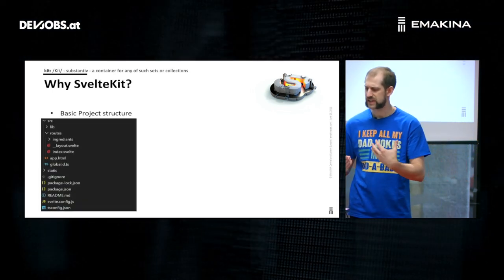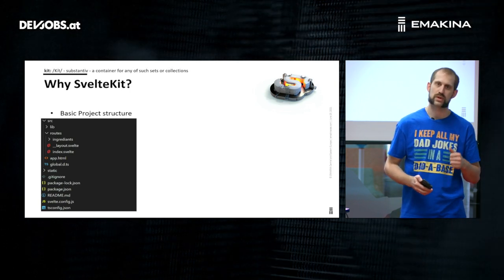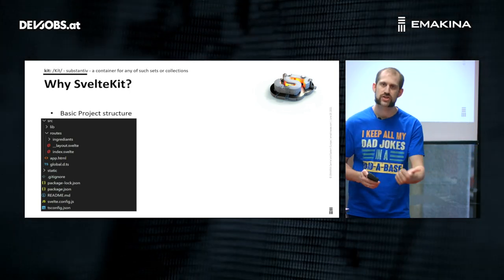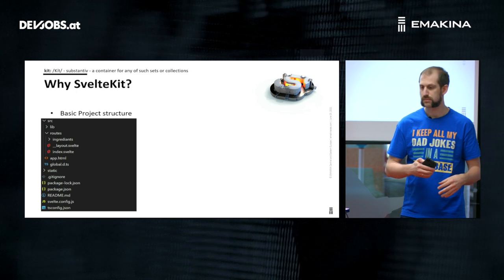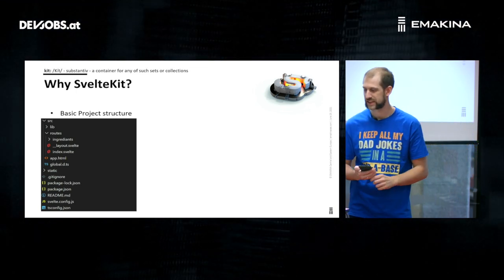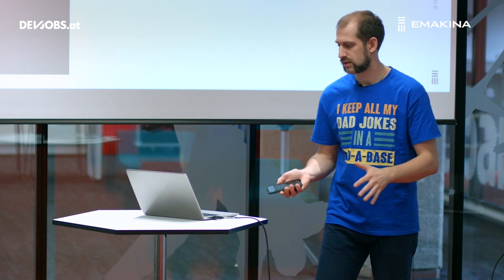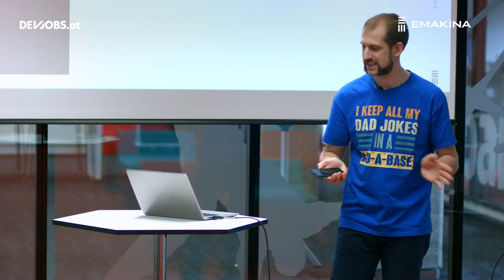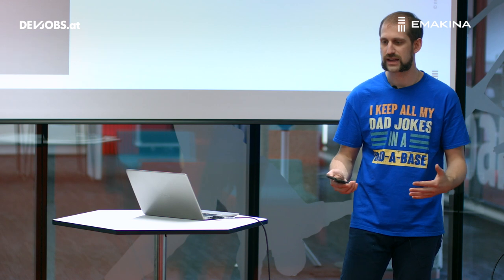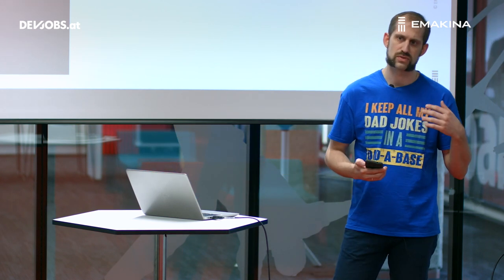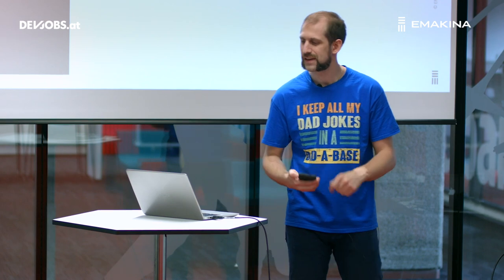Let's look at the basic project structure. You have your source folder, and inside it a lib folder where all your shared logic and shared components live. The nice thing is you can reference them from anywhere using a '$lib' shortcut, so you don't need to worry about relative nesting paths when you move something around. Then you have the routes folder — it's file and folder based. You can also use regex and placeholders, so a lot of great things come packed with SvelteKit.